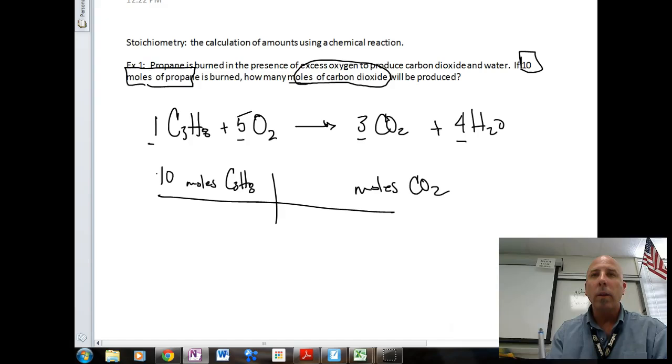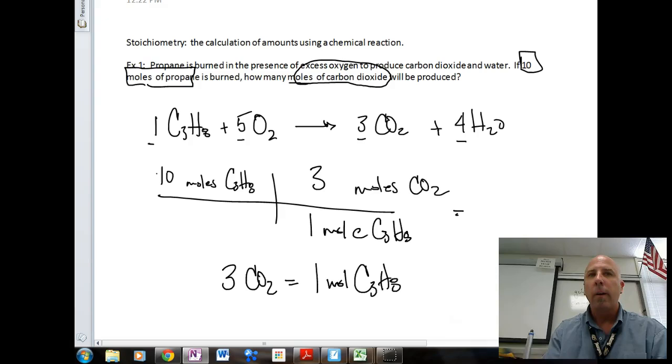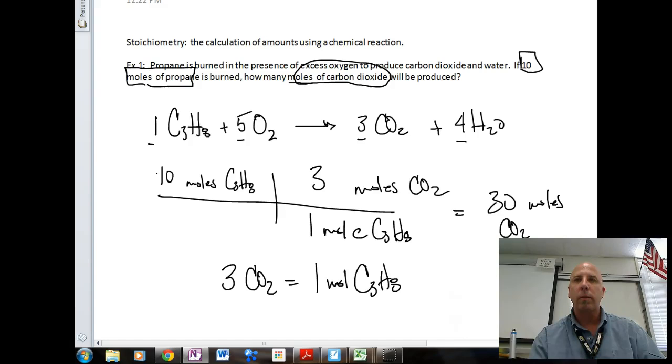Now what we're going to use is the equality from this balanced equation: for every three moles of CO2, you burn one mole of C3H8. And so we're going to do three moles of CO2 there and one mole of C3H8 there. And so obviously, we get 30 moles of carbon dioxide being produced. And that's our answer there.